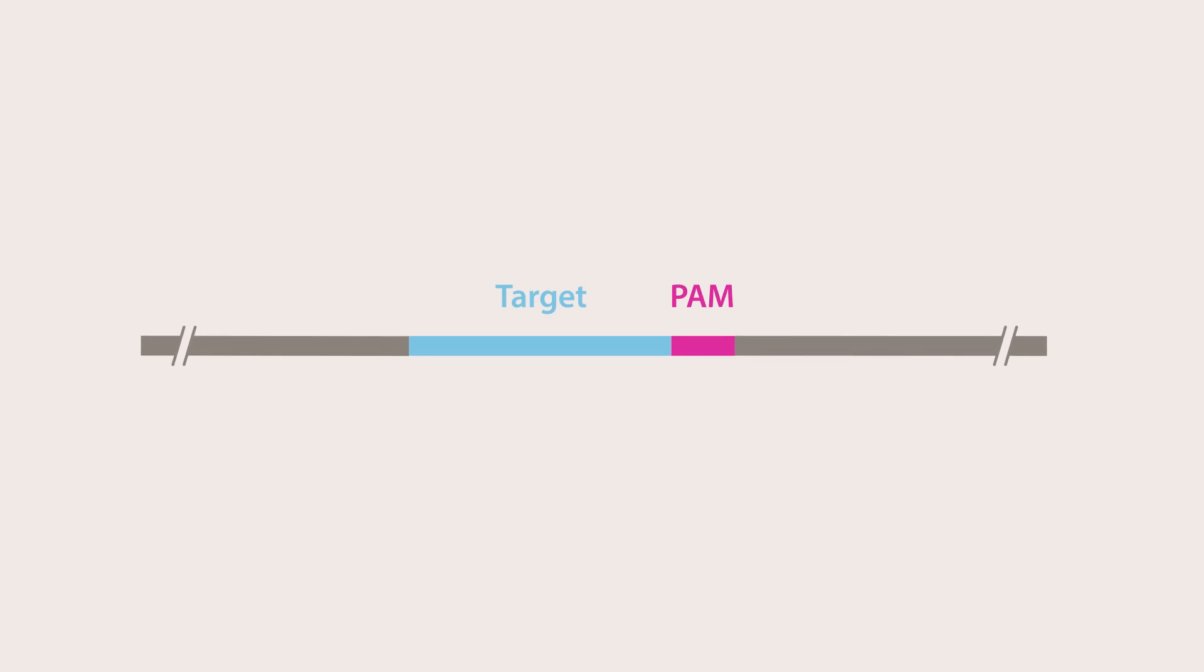Gene editing experiments can be designed so that when a bacterium is edited via recombineering, it will lose a PAM sequence at the insert site. This will prevent Cas9 from cleaving the DNA of edited cells.